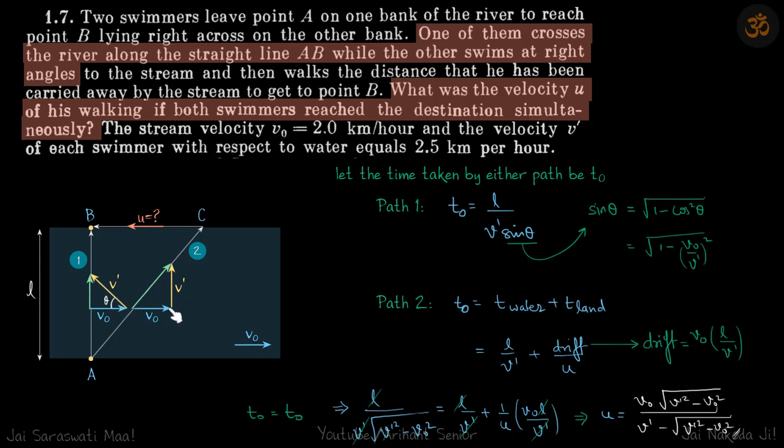In the second case, he is trying to swim perpendicular to the river, so the eventual velocity will be along this direction. He's saying that time taken by the first path is same as time taken by the second path and we need to find what is the velocity of him walking.